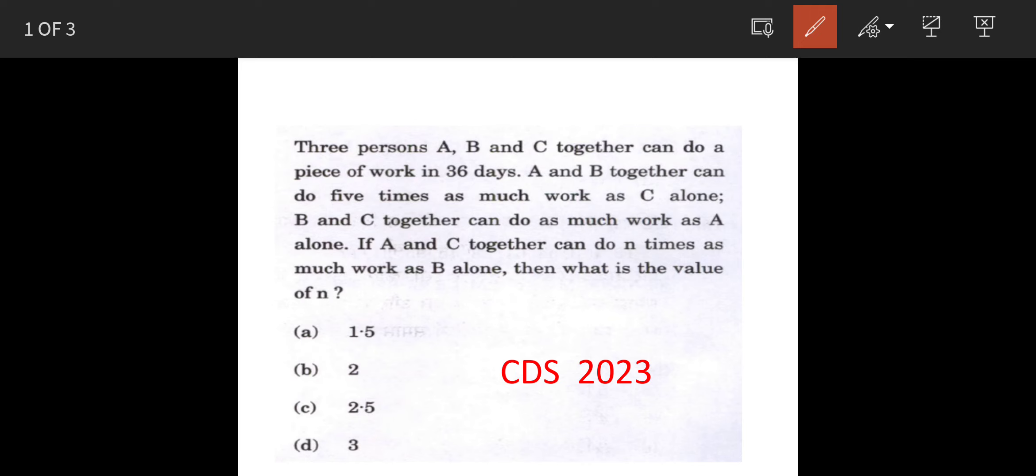There are three people A, B and C and they can do a certain piece of work in 36 days. Now the rate of work by these people in pairs, that is A, B, B, C and AC, is also given.